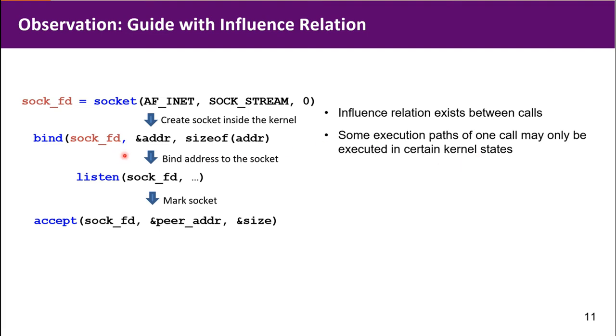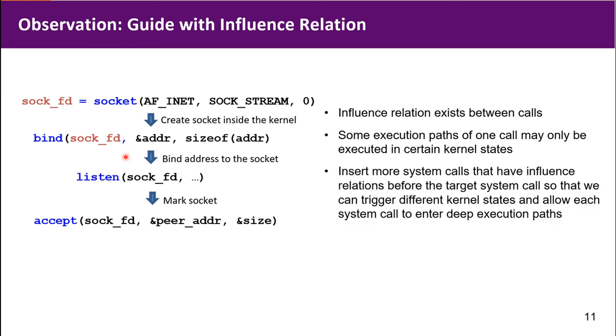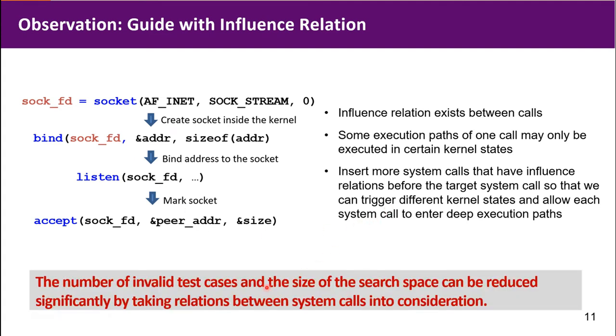For example, bind would return early if we don't create a socket for it first. Therefore, we should insert more syscalls that influence the target call, so we can trigger different kernel states. We can do this by taking relation into consideration when generating and mutating the call sequence.